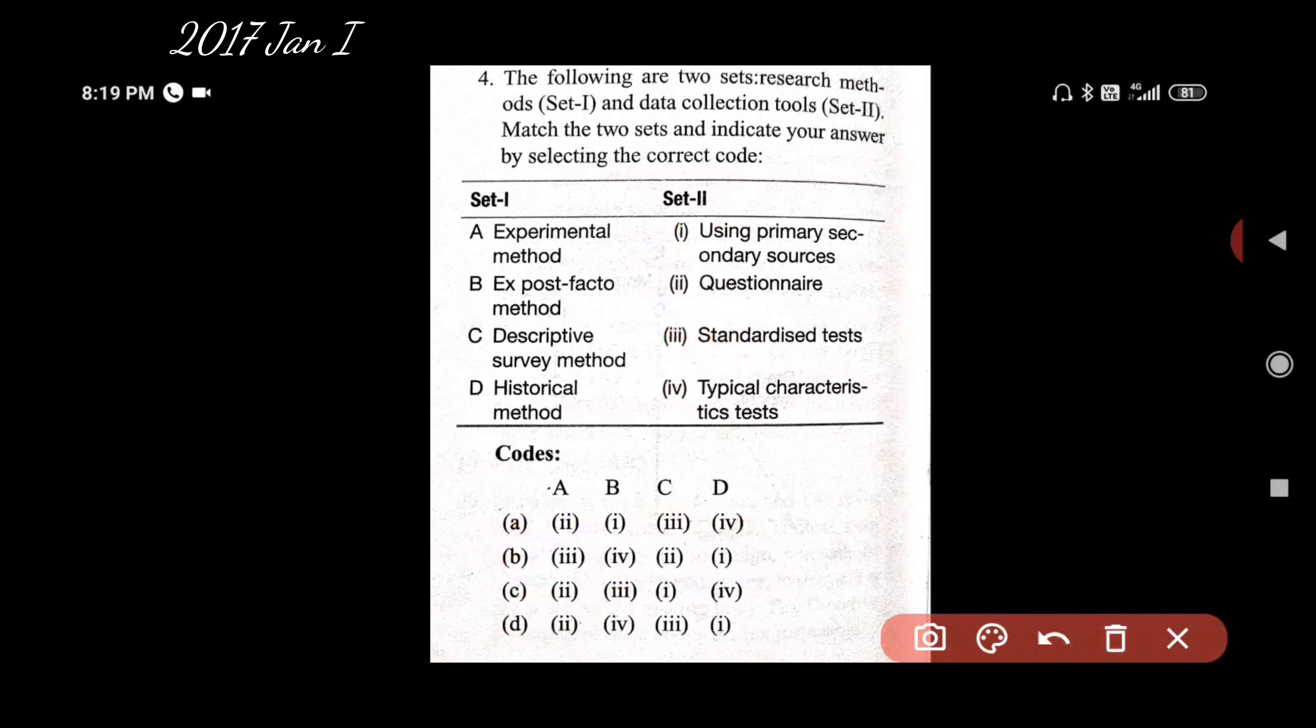Match the following. We have to match the various methods with their respective tools. We'll pick out the easiest one first - D, historical methods, will be one: using primary or secondary sources. So our answer will be either B or D, so we'll cancel out A and C. Experimental method - the tests are universally accepted and are standardized, so A will be 3, so our answer will be B. Ex post facto method will use typical characteristic tests and descriptive survey method will use questionnaire.